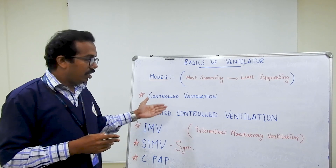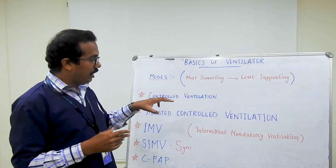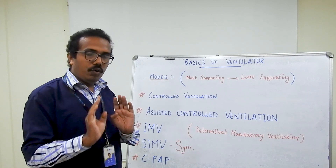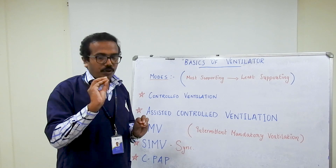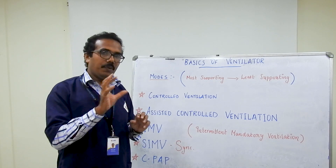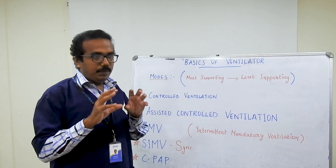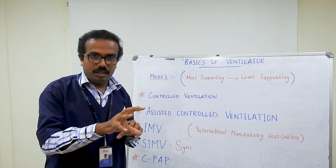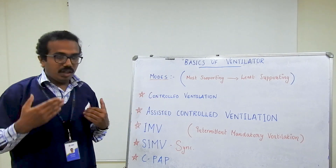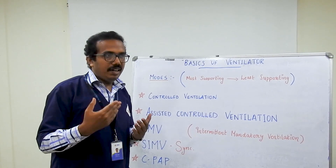Next comes assisted controlled ventilation. Here we get some assistance in ventilation. The ventilator rate and tidal volume are preset. When the patient takes a spontaneous breath, the ventilator will support that spontaneous breath. However, this can be a drawback — because every spontaneous breath is supported at the full preset tidal volume, it can lead to hyperventilation and respiratory alkalosis.